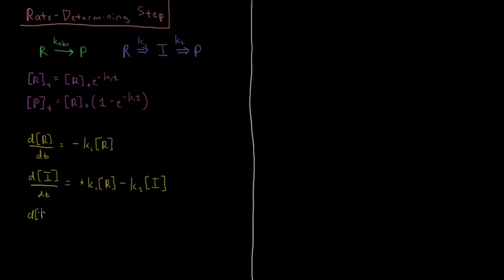And then we have dp dt change in concentration of product. Product can only get produced through reaction of the intermediate so that is going to give us a plus k2 times concentration of i.